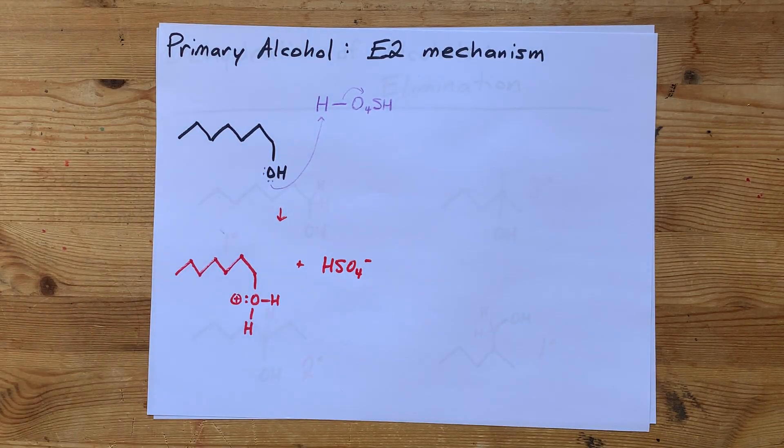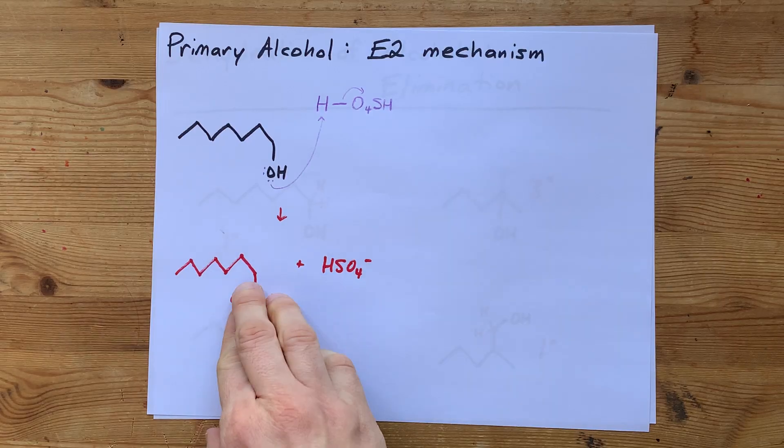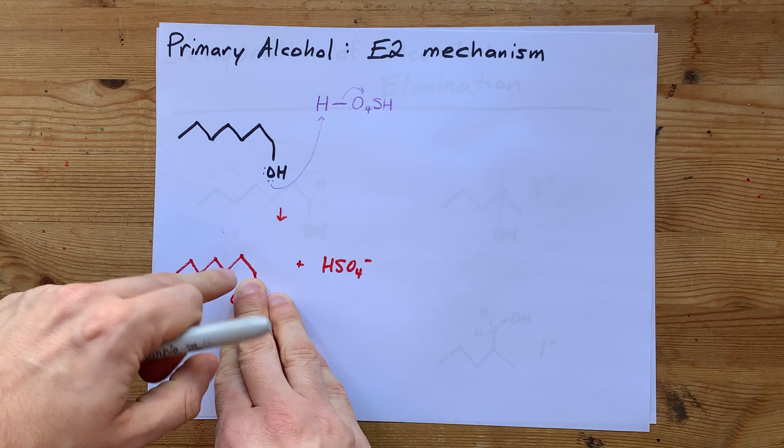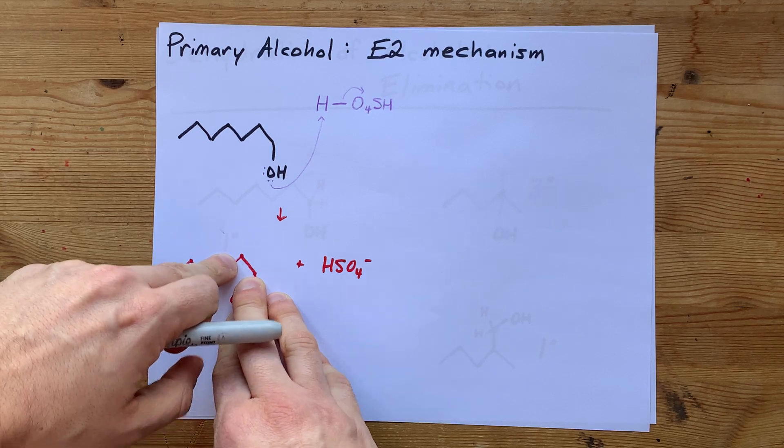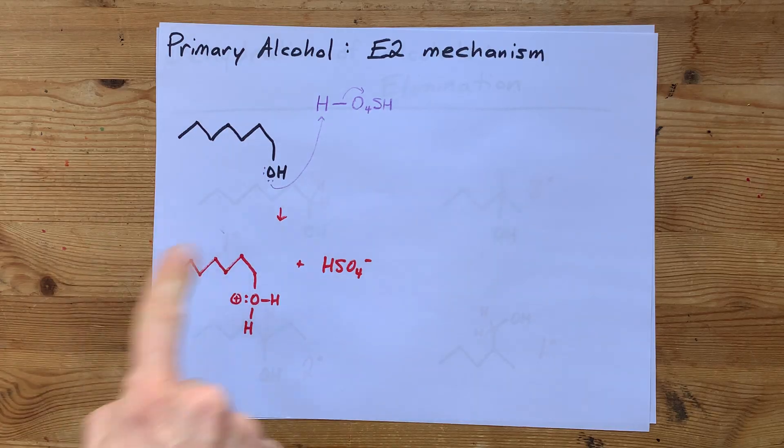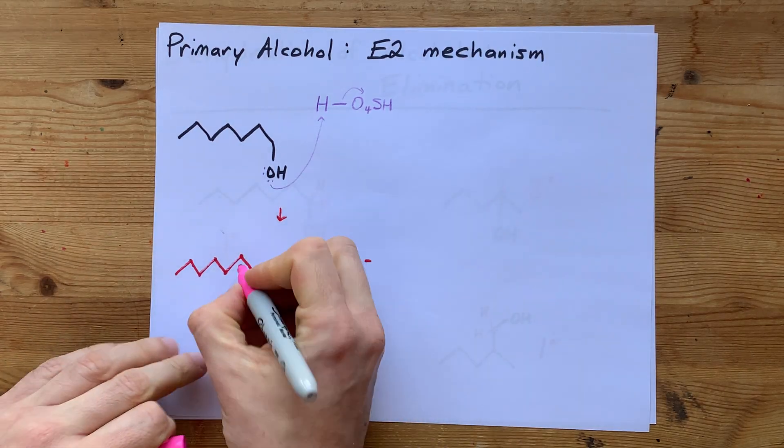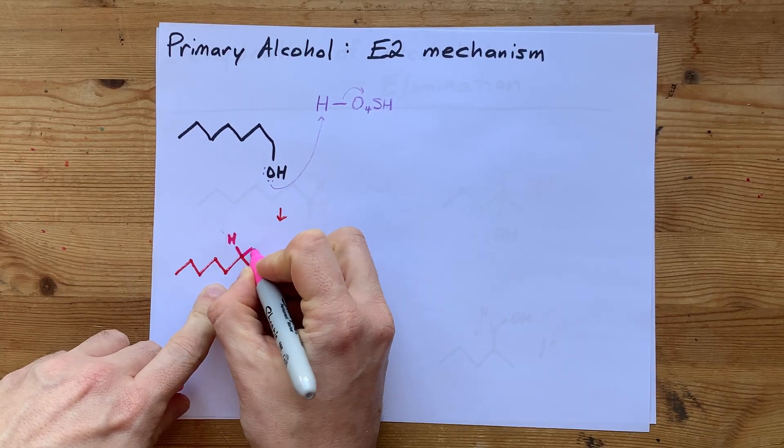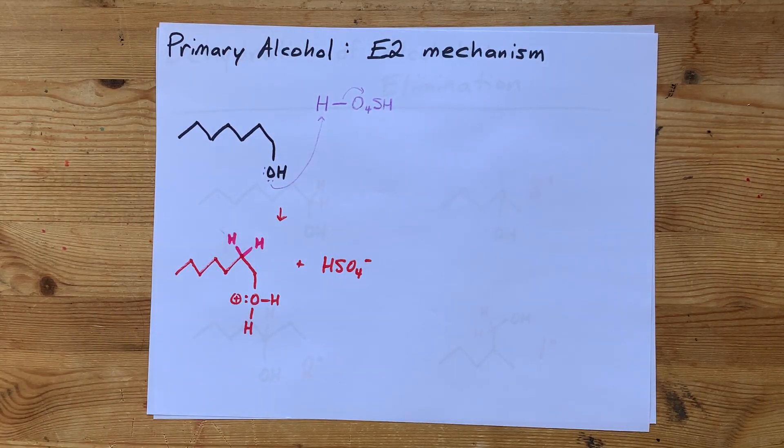That's countered by the extra minus charge left on whatever the conjugate base of the acid you used was. Now, the question is, if we're going to eliminate this part of the molecule, we need to eliminate a hydrogen off of the next carbon in order to leave behind the double bond. I'm going to draw in those hydrogens here. That next carbon here has one, two extra hydrogens on it.